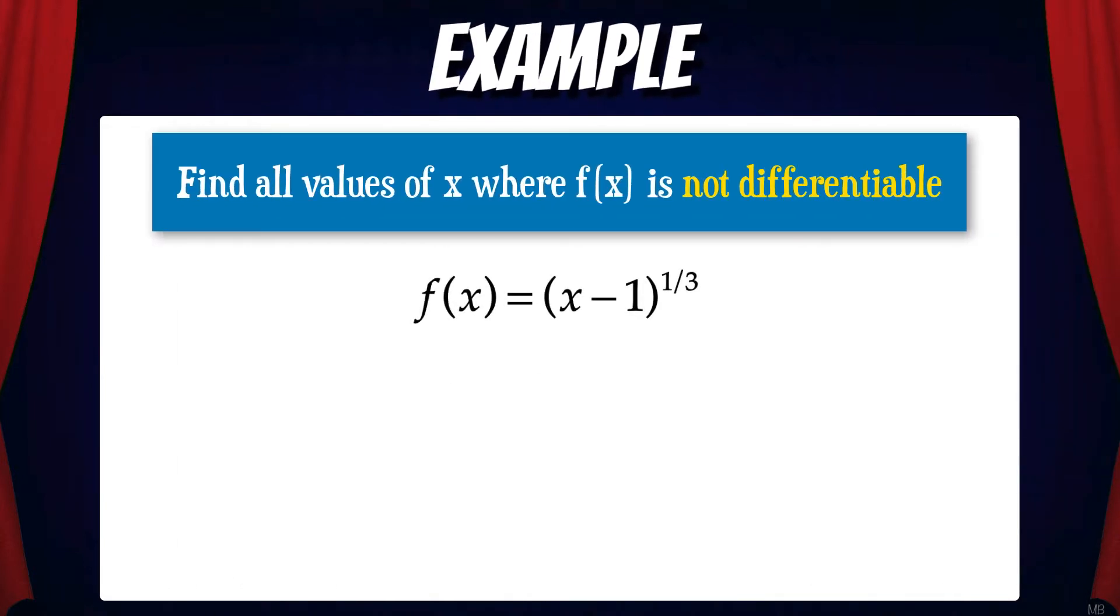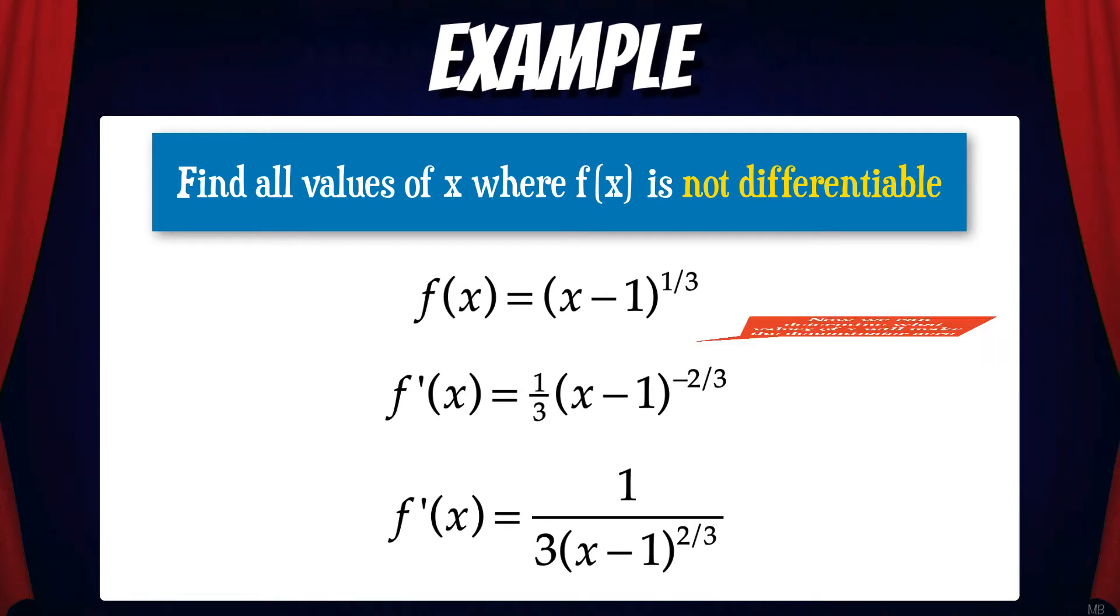Find all values of x where f is not differentiable, where f equals the quantity of x minus 1 to the one-third power. Let's start by taking the derivative. f prime of x equals one-third times the quantity of x minus 1 to the negative two-thirds power. And this is the same as 1 over 3 times the quantity of x minus 1 to the two-thirds power.